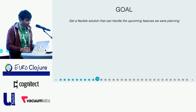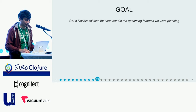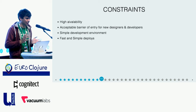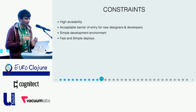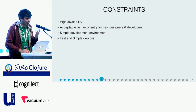So we set out with a goal to get a new, more flexible solution that can handle all the upcoming features we wanted to implement, while at the same time addressing some of the pain points we had earlier. Given that we're a payment solution, we had a few constraints. We were aiming for high availability — we're a service consumed by third parties, and downtime on our side will affect all our customers and their customers. On top of that, we really wanted to choose a solution with an acceptable barrier of entry, both for designers and developers, since we were planning to hire more people and wanted them to hit the ground running.